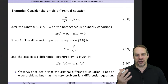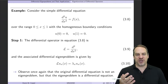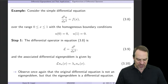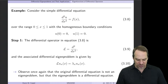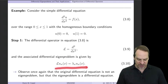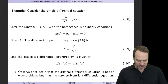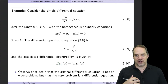We'll address in a later video how to deal with situations where we do not have homogeneous boundary conditions. So the first step, which is going to occupy us for this current video, is to take the differential operator from our differential equation, extract it out, and then form its eigenproblem. The differential operator is d squared dx squared. So we form the eigenproblem L u_n equals lambda_n u_n, where L is our d squared dx squared differential operator. We're going to solve this as a differential equation.